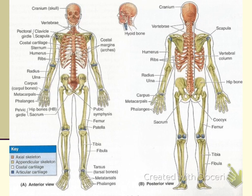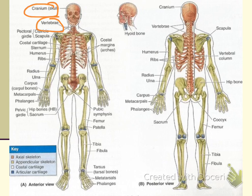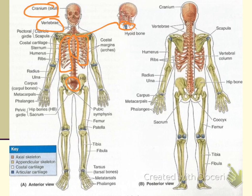Here is a picture of the skeleton. The bones in orange are the bones that make up the axial skeleton. They include bones of the cranium or skull — your frontal, temporal, parietal, and occipital bones — the vertebrae including cervical, thoracic, and lumbar vertebrae, and the sacrum. Also the sternum or breast bone, the ribs, and the hyoid bone, which is located right underneath the jaw on the neck. All those bones make up the axial skeleton.